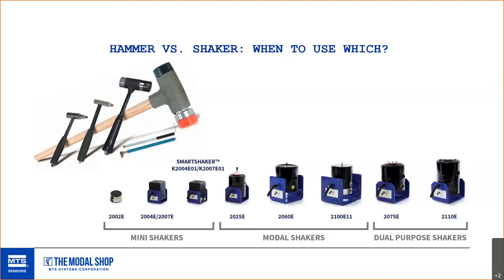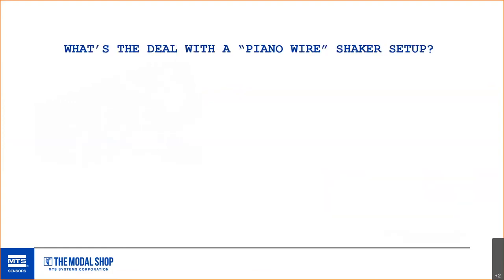You may even use a hammer first just to decide where to locate a shaker, to make sure you're exciting all the important modes — and specifically to ensure you don't locate the shaker at the node of a mode, which would prevent you from exciting that particular mode. They're very complementary, and in some cases one is certainly better than the other.